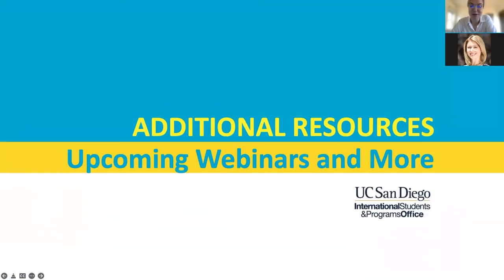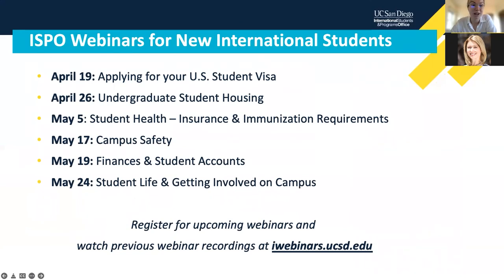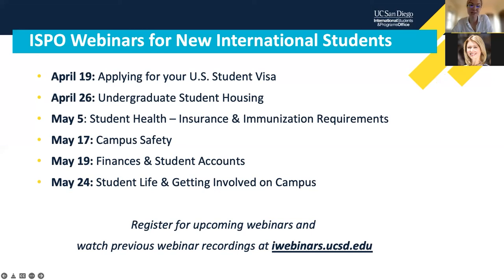Regarding upcoming webinars: on April 19th we'll have a webinar dedicated specifically to applying for your US visa in more detail. April 26th features partners from Housing, Dining, and Hospitality to talk about on-campus and off-campus housing. May 5th covers student health — insurance and immunization requirements for international students. May 17th is campus safety, May 19th is finances and student accounts, and May 24th is student life and getting involved on campus. You can register for all upcoming webinars and watch previous recordings at iwebinars.ucsd.edu, clicking on webinars for newly admitted students.